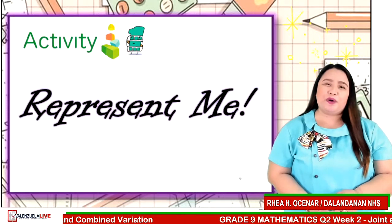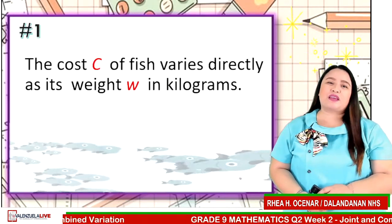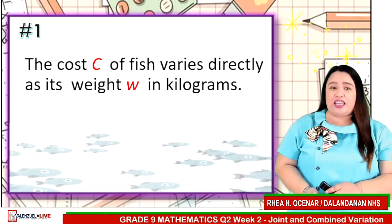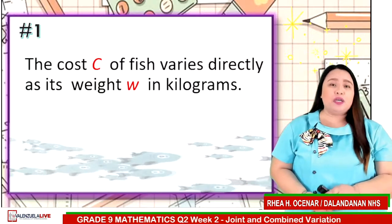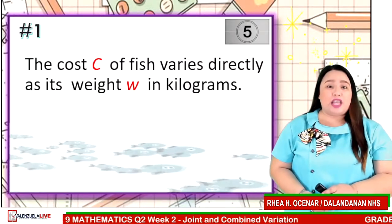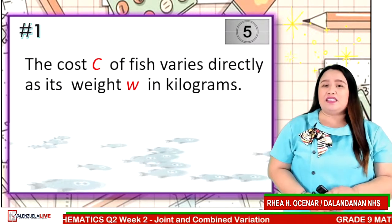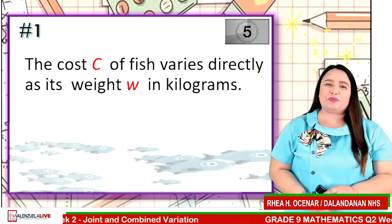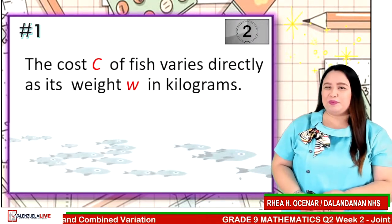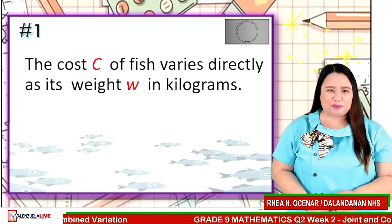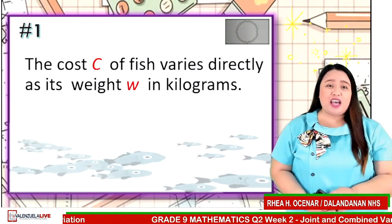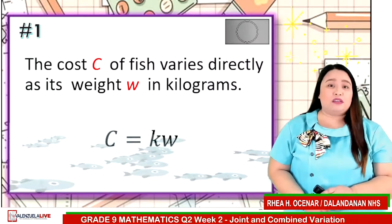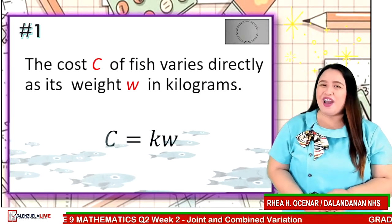Statement number 1. The cost C of fish varies directly as its weight W in kilograms. Translate into mathematical statement. Timer starts now. Time is up. If your answer is C is equal to kW, then you are correct.